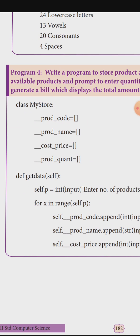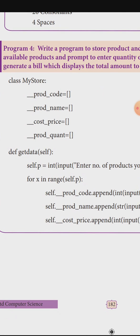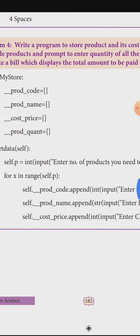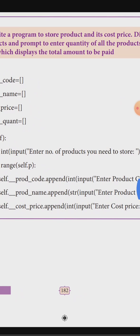The class name is MyStore. We define class variables: product_code as an empty list, product_name as a list, cost_price as a list, and product_quantity as a list. These are class-level variables defined inside the class.